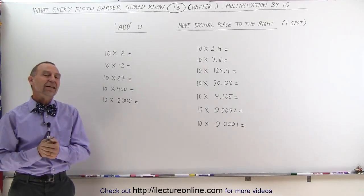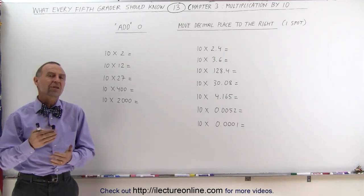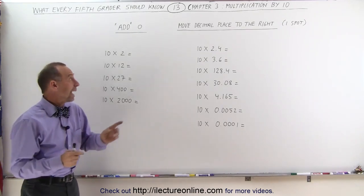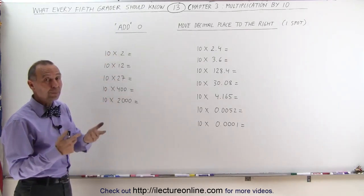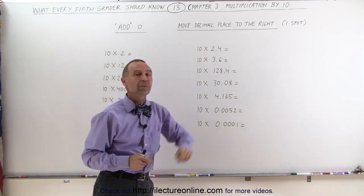Welcome to Electron Line, and now let's talk about multiplying by 10. There's two things that you need to do. Either you add a zero to the end of the number you're multiplying, or you move the decimal place over to the right one spot.